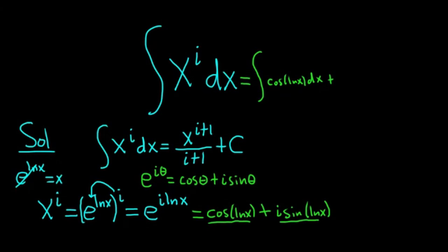and then I'm going to pull out the i. So i sine ln x dx. And we know that this is equal to x to the i plus 1 over i plus 1 plus c. So now what we'll do is, again, we'll take this and write it in a familiar way, and then we'll use matching to figure out these two integrals.